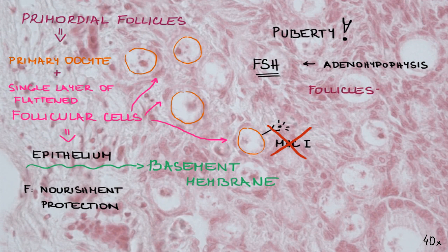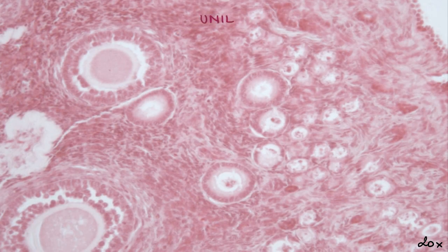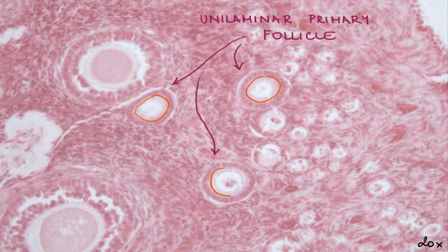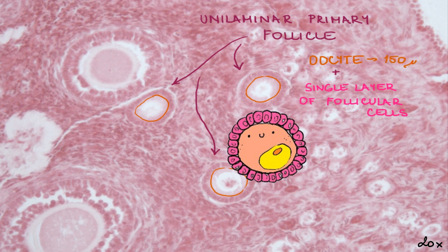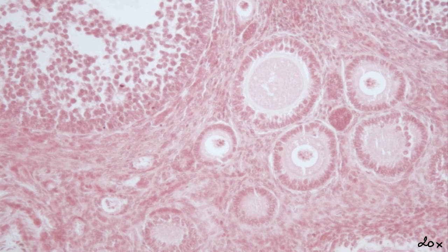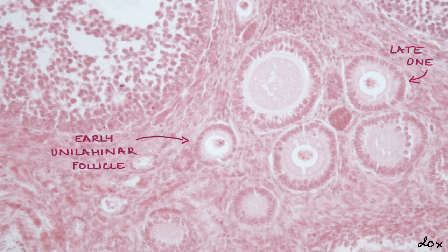We distinguish primary, secondary, and mature or Graafian follicles. Now let's look at how a primordial follicle changes into a unilaminar primary follicle, which still consists of an oocyte and a single layer of follicular cells. In the first phase, the oocyte continues its growth and its diameter reaches up to 150 micrometers. Follicular cells form a simple cuboidal or even columnar epithelium around the growing oocyte and also produce proteins. Stages of development are not strictly demarcated, so we can distinguish an early and a late unilaminar primary follicle. The late unilaminar primary follicle is bigger in size but still has only one layer of follicular cells.